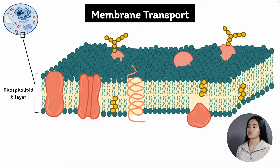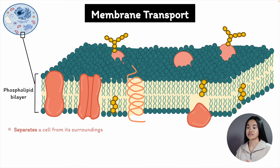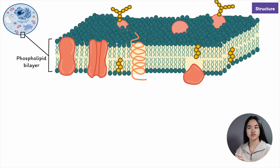Cells need to be able to exchange molecules with their surroundings to develop and survive. They need to import nutrients like carbohydrates and amino acids, as well as get rid of metabolic waste. Before we go through the different types of transport, let's first look at the structure of plasma membranes, because this structure separates a cell from its surroundings and controls the movement of substances between the extracellular fluid and the cytoplasm. It helps regulate what comes in or out of cells, as well as performs other important functions such as cell recognition.